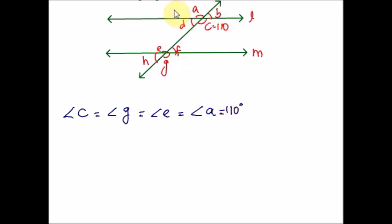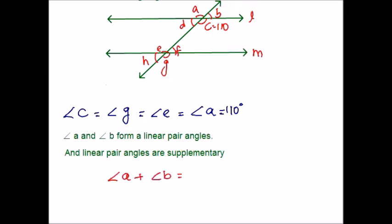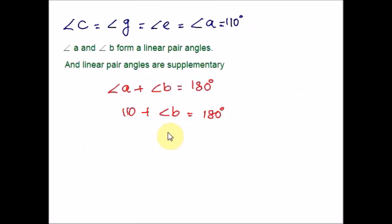Now please compare angles A and B. These two are angles on a straight line and form a linear pair. Linear pair angles are supplementary, meaning they add up to 180 degrees. We already found angle A equals 110. So substituting: angle B equals 180 minus 110, therefore angle B equals 70 degrees.